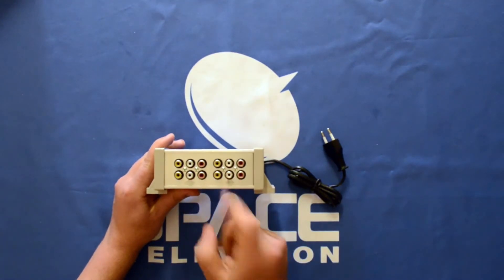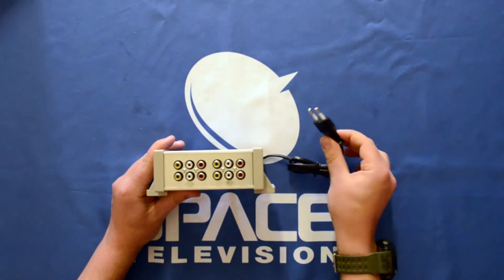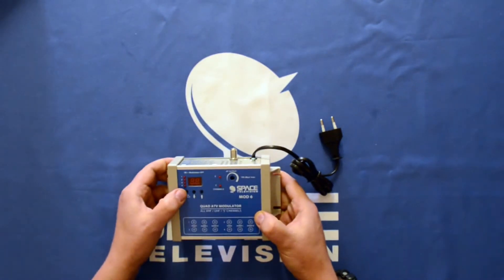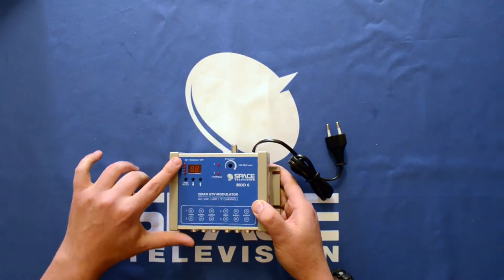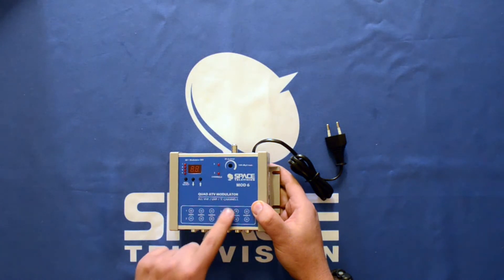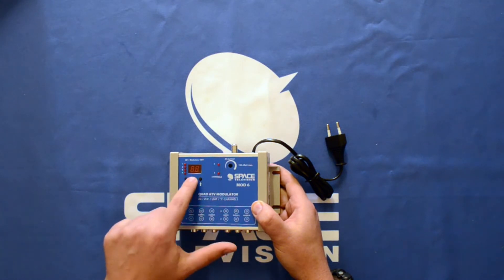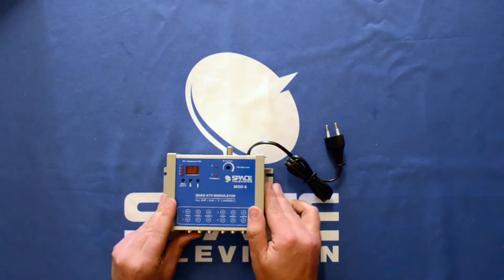We have our four AV inputs into the device itself, 220 main electricity. Here we have our buttons and our interface to select between modulators 1, 2, 3, or 4, up and down arrows. There we have our output.